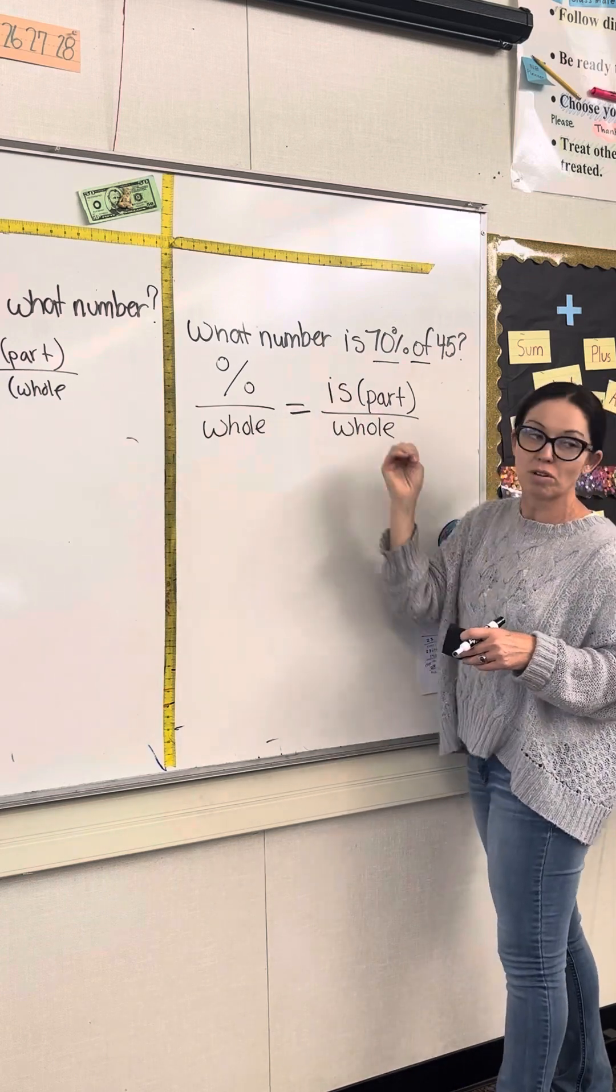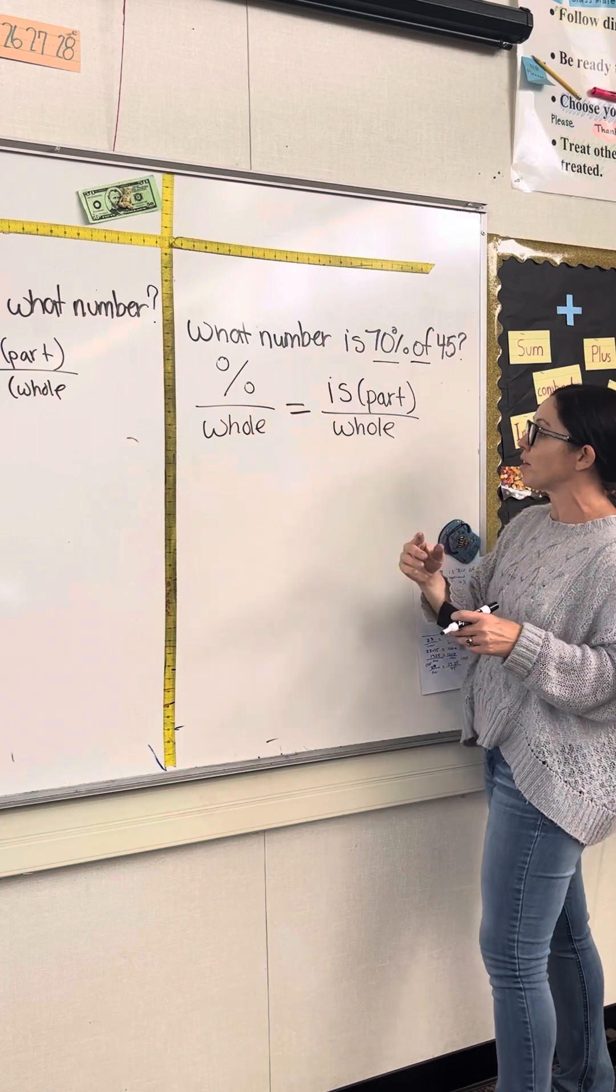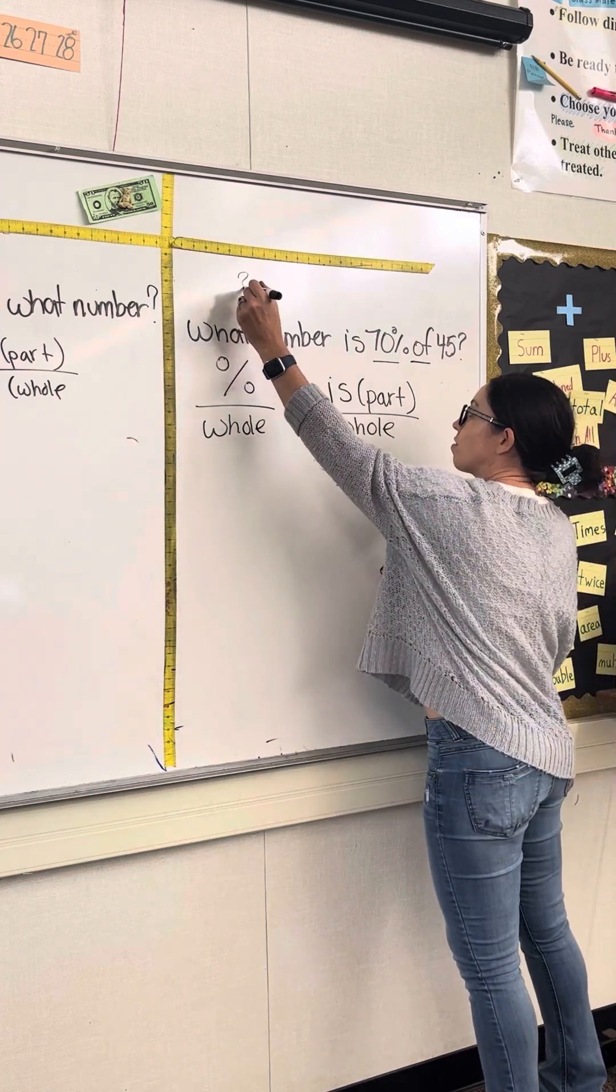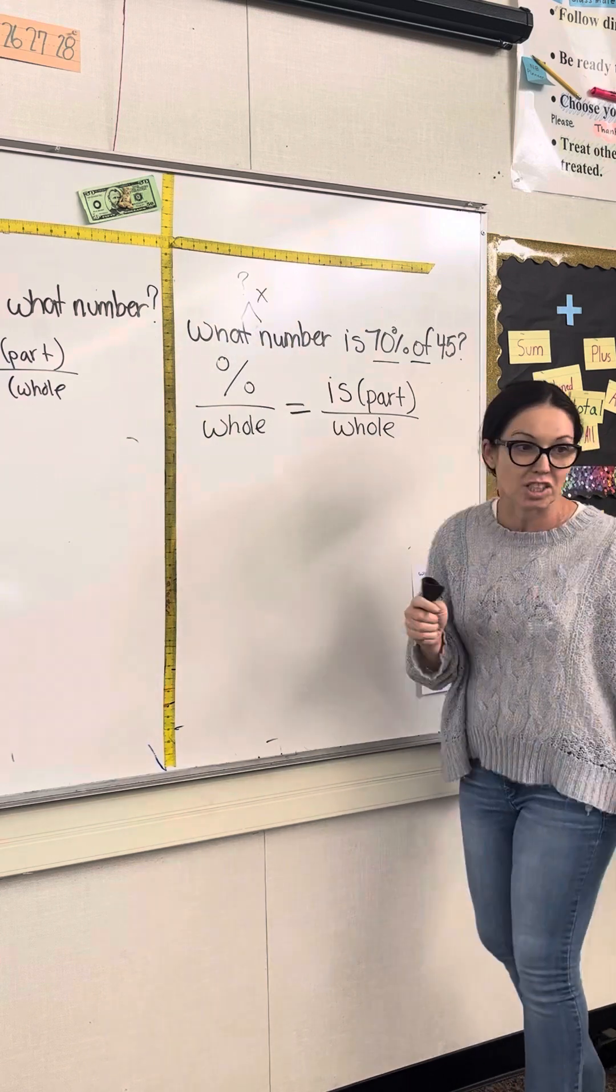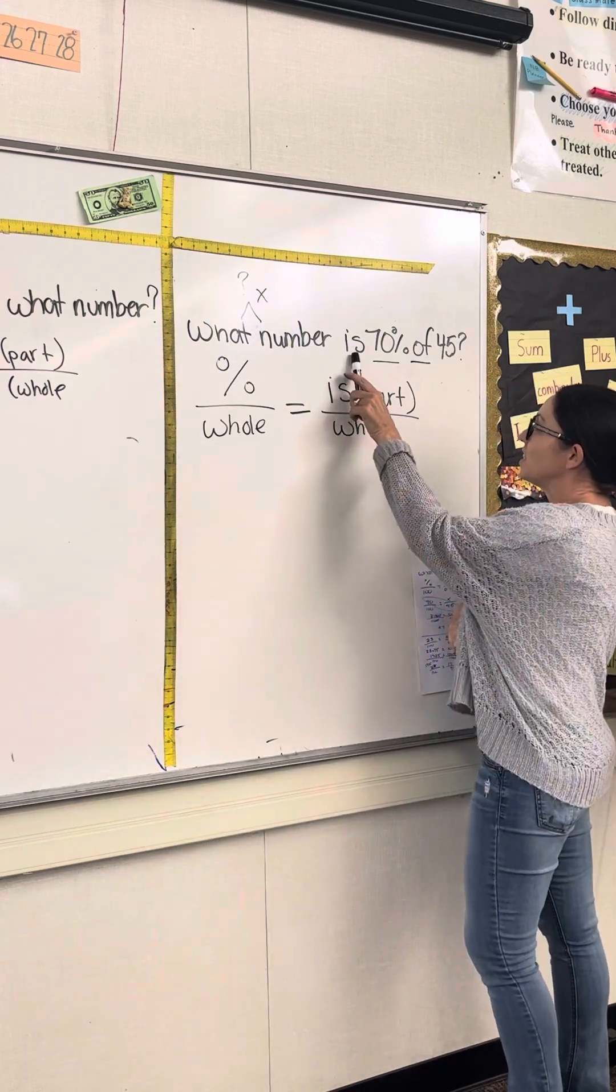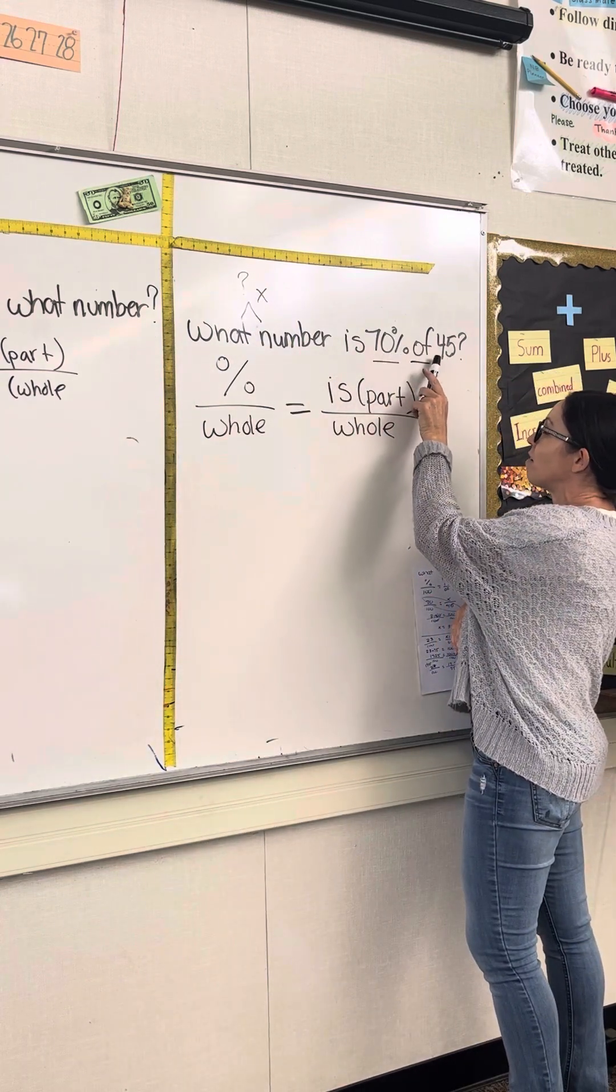So going back to our original question, what number, the number being the unknown, or the X, if we're thinking algebraically, is 70% of 45.